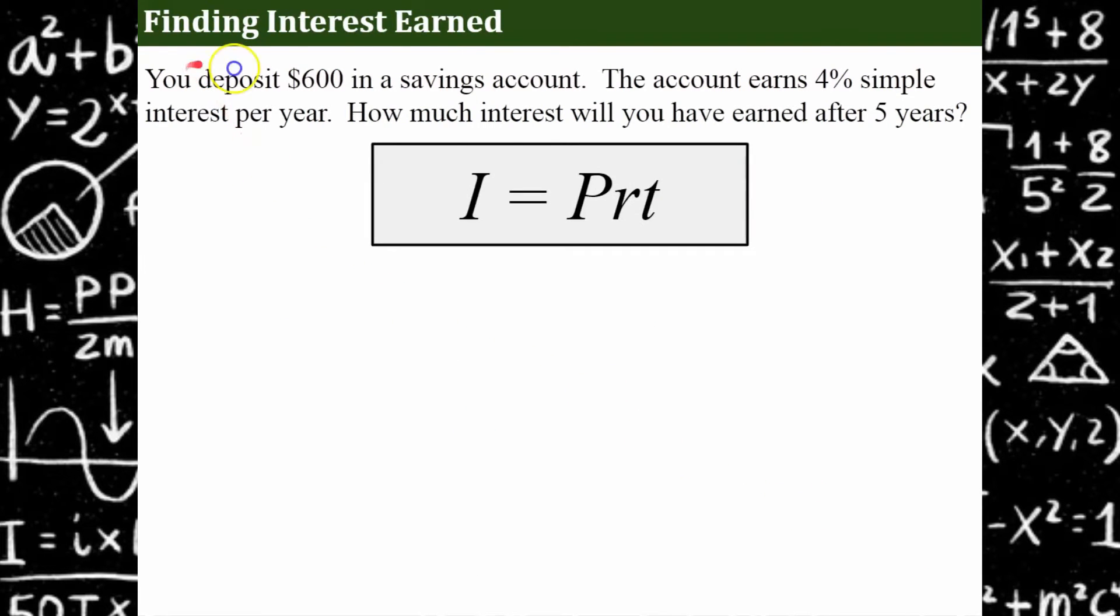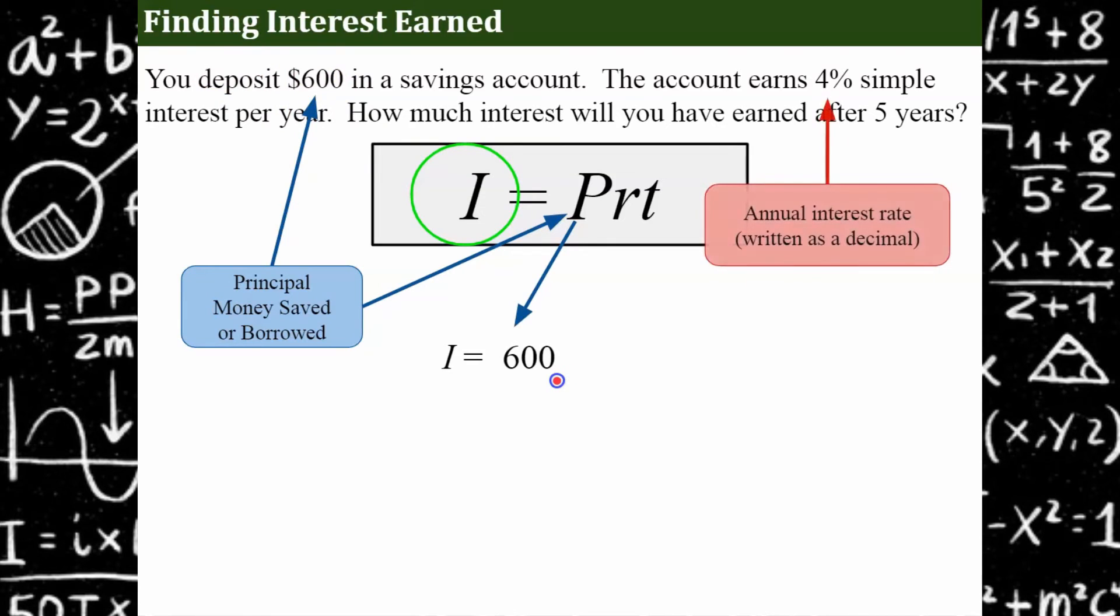All right, let's go over an example. We're going to find the interest earned when we have deposited $600 into a savings account. The account is going to earn 4% simple interest every year. And we want to know how much interest will we have earned after five years. So here we go. What we want to know is the interest. So we have these four pieces of information and the interest is what we're solving for. That's very important to note. The principle is our money saved or borrowed, and they told us that we've deposited $600. That's our principle. So we're going to put that into our equation. The second piece of information that we need is our rate. We see right here that that's 4%. And 4% written as a decimal is 0.04.